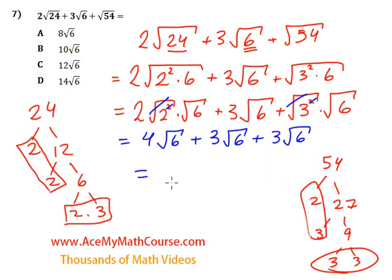Now we can just combine like terms. And they're all like terms. Because all these numbers are multiplying the square root of 6. So 4 plus 3 is 7. Plus 3 is 10. So we get 10 times the square root of 6. So the answer is B. That's it.